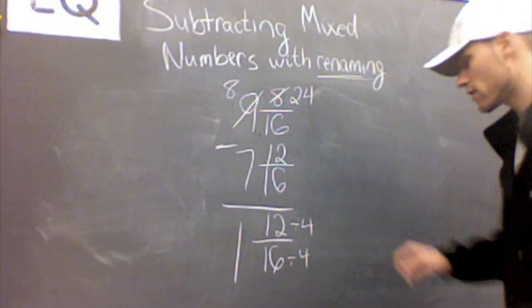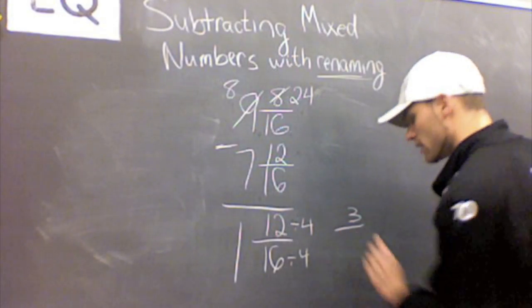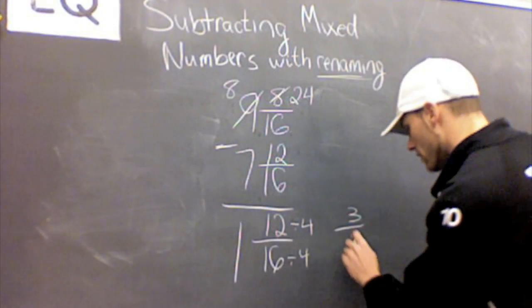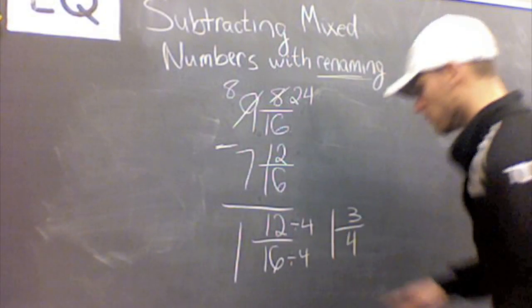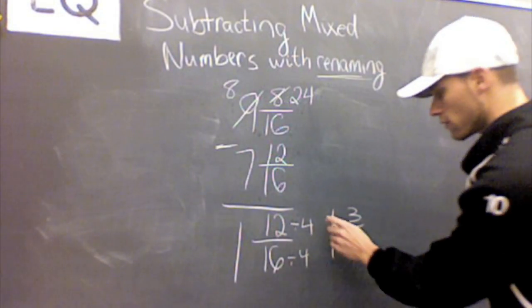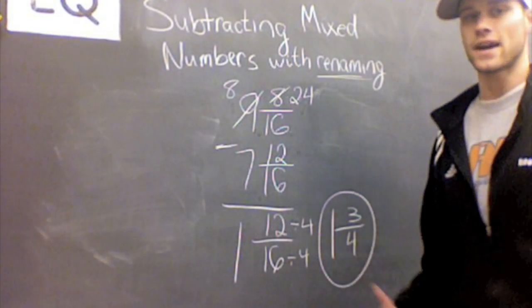When you divide 12 divided by 4, you get 3, and 16 divided by 4 is 4. So I'm left with 1 and 3 fourths as my final answer.